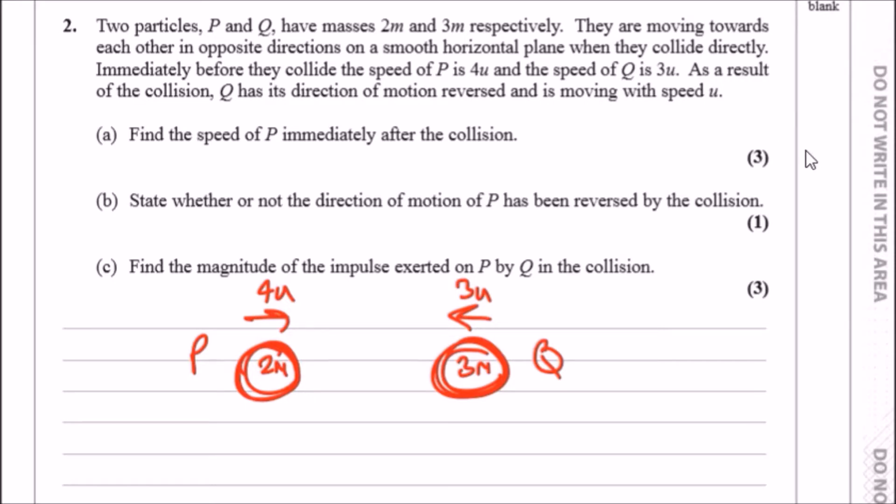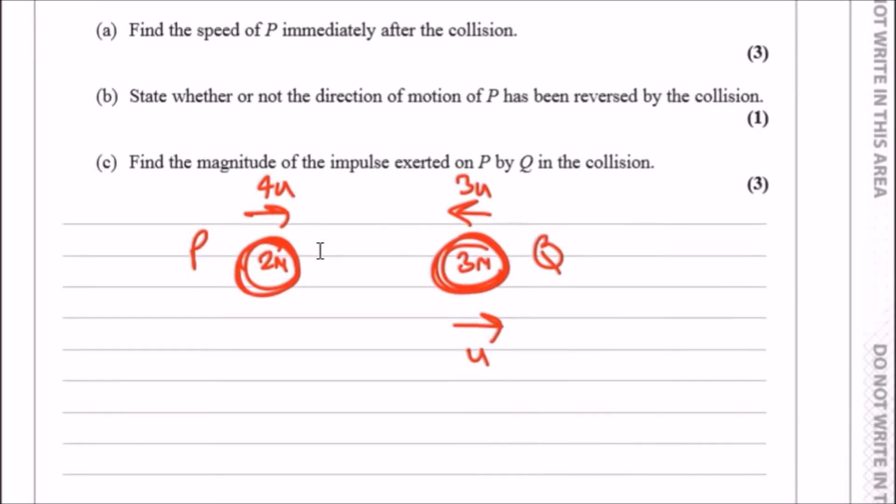After they collide, Q has its direction of motion reversed and is moving with speed u, so Q is now going here. Now they want us to find the speed of P, so we can call this speed v. I always work with the direction of motion.